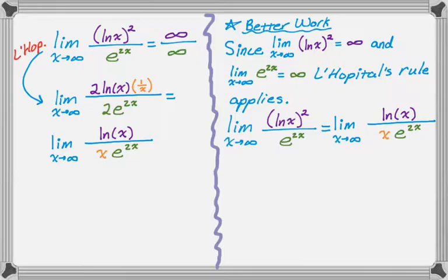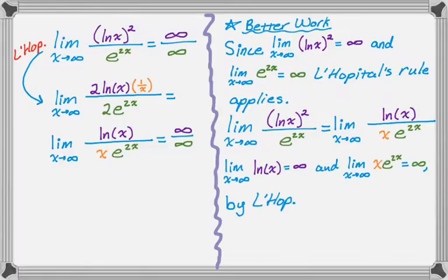Now I want to try to evaluate on the left hand side. The natural log of x definitely goes to infinity. x times e to the two x definitely goes to infinity. So I have this. My better work, I would just write that out in words. So now I'm going to apply L'Hopital's rule again. On the left hand side, I would show this.